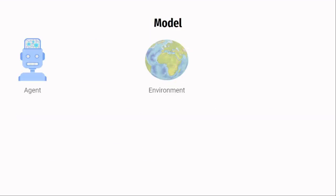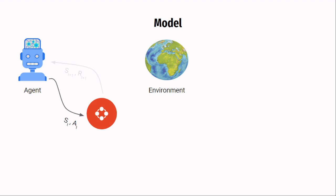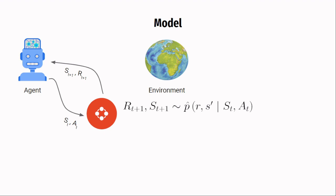In the previous video, I skipped an important component: the model. A model is used to simulate the environment and produce simulated experience. A model can be anything that the agent uses to predict how the environment will respond to its actions. Given a state and an action, a model produces a prediction of the next state and next reward.